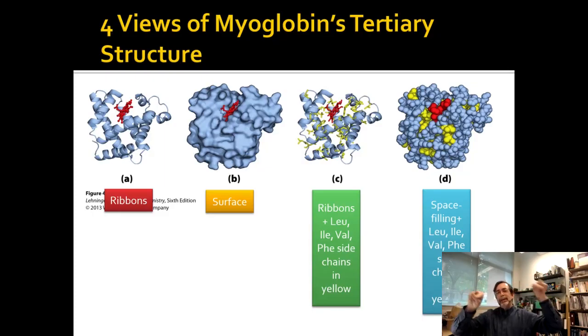There's a few yellow ones peeking out. The proteins aren't hard and fast followers of every single rule that we make for them. But the general rule of the leucines, isoleucines, valines, and phenylalanines are on the inside. That's a decent rule. 90% of the time, it's true.